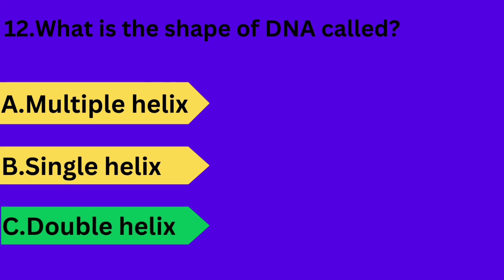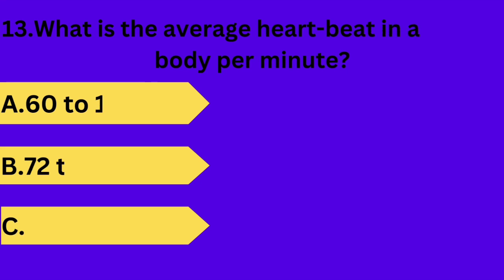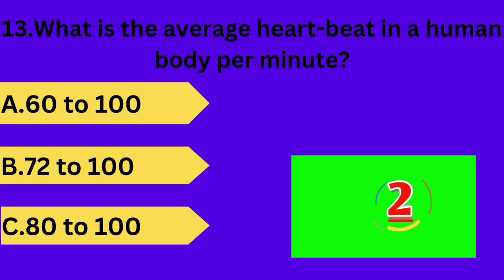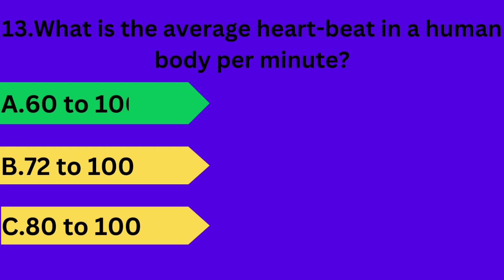And next question is: what is the average heartbeat in a human body per minute? Option A: 6200. Option B: 7200. Option C: 80 to 100. Your time starts now. Answer is option A: 6200.